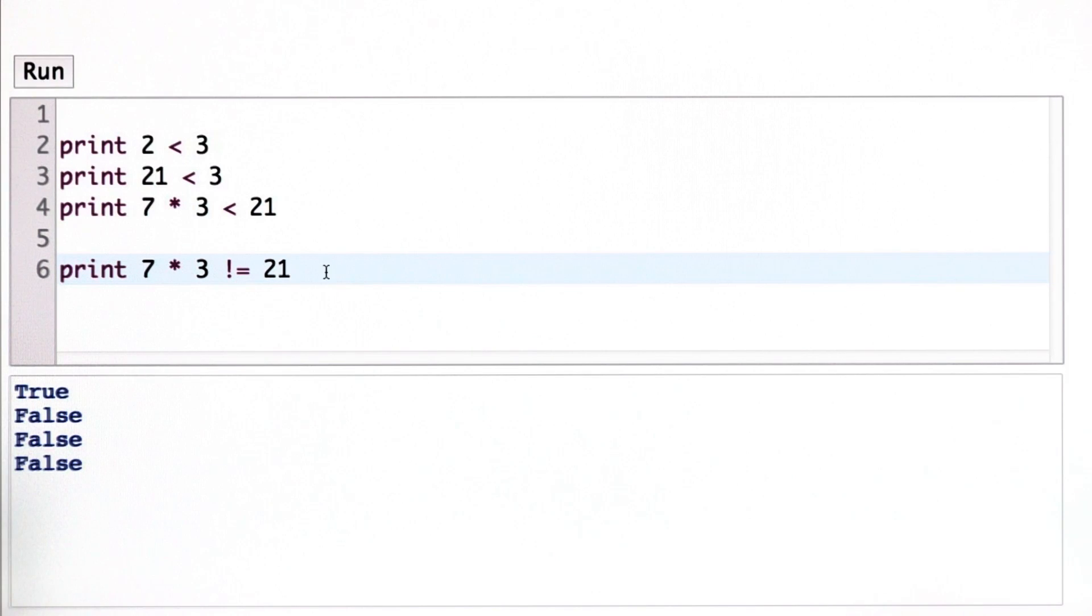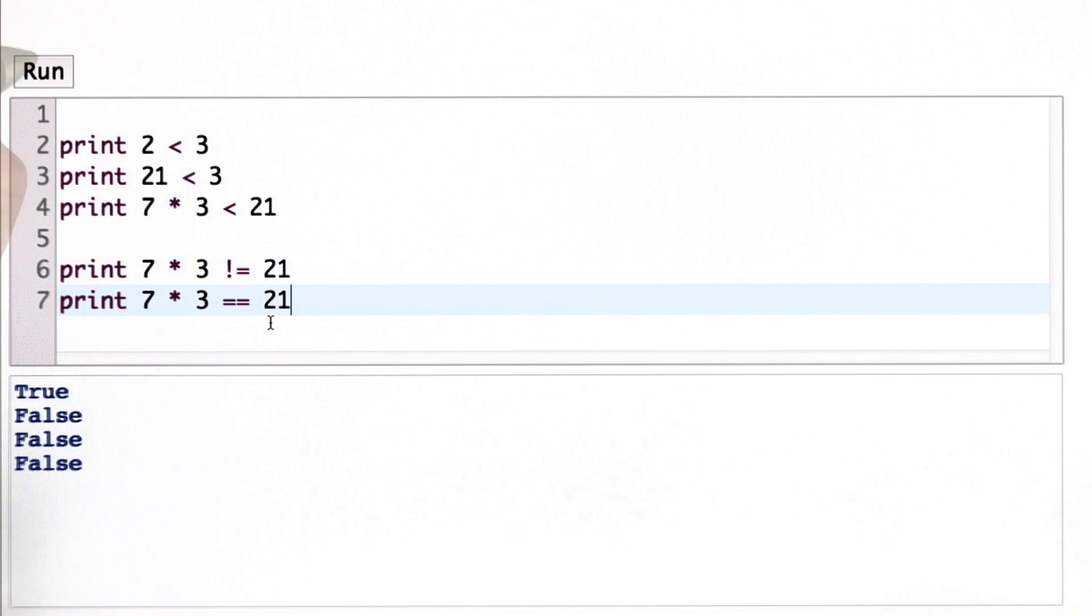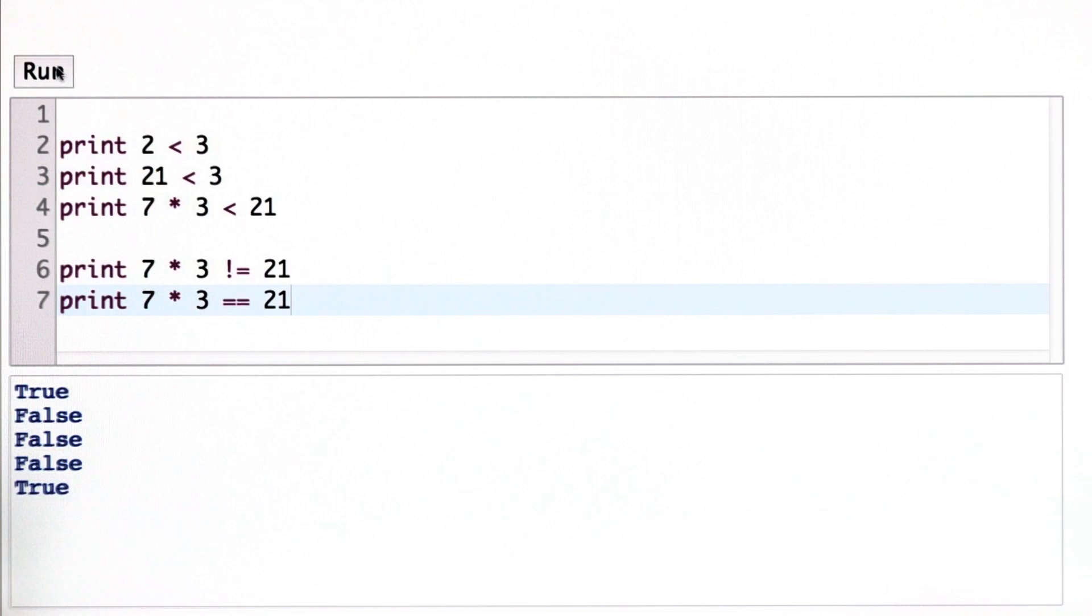If we want to do an equality comparison, we don't use the equal sign. We use 2 equal signs. We call that the double equal. So now we have 7 times 3 double equal to 21, and the result there is true.